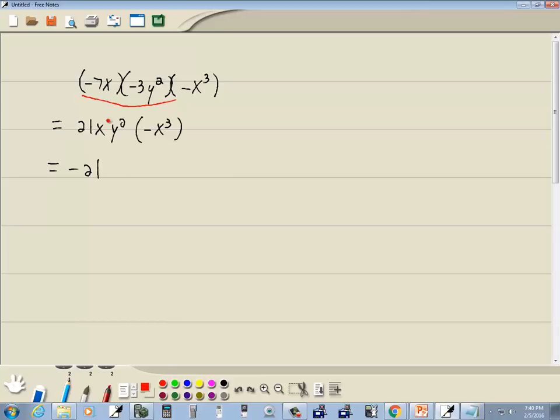Now here, remember if you have x, that's the same as x to the first power. We got x to the first power times x to the third. If you got x to the power times x to the power, you add the exponent. So that becomes x to the 1 plus 3. And then we only have one y, so that just carries down.